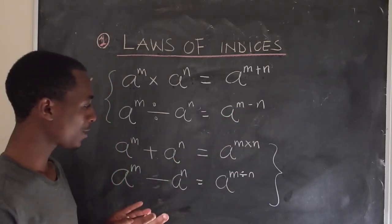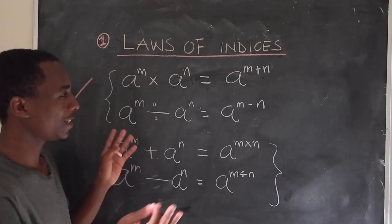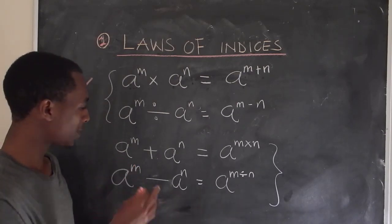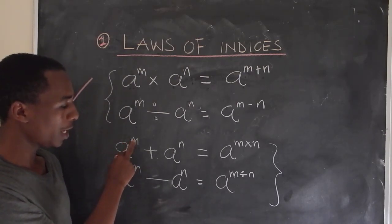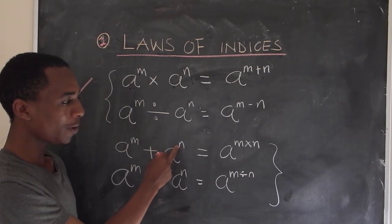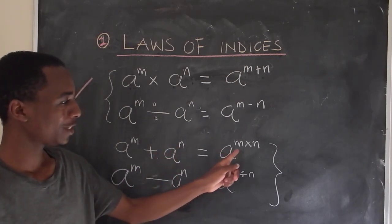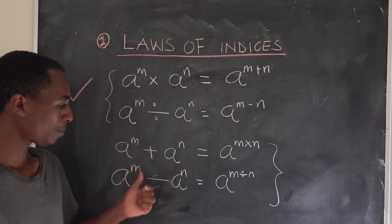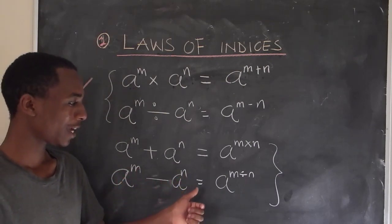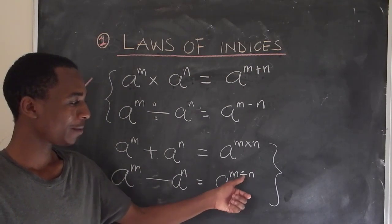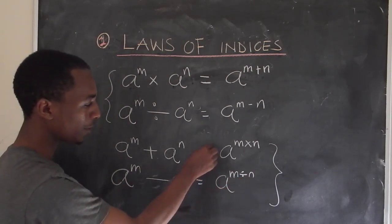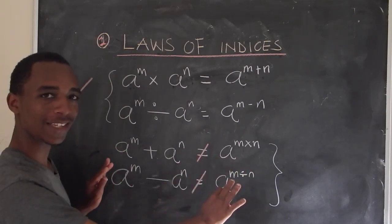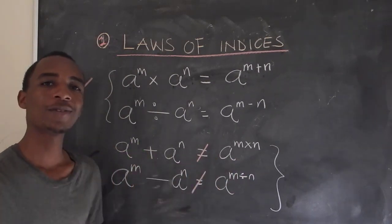Now here comes the misconception. Perhaps because of the multiplication and addition here, some students will tend to think that a to the power m plus a to the power n is the same as a to the power m times n. Also, there is this common one here: a to the power m minus a to the power n equals a to the power m divided by n. Now this is not true, and so these laws of indices down here do not exist. Let's move on to number three.